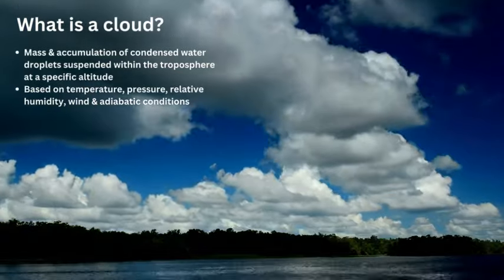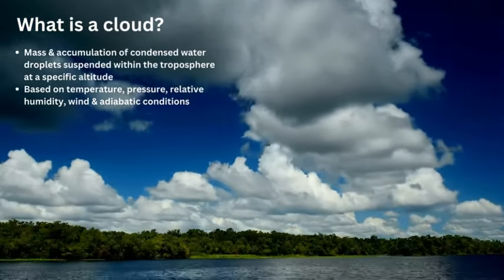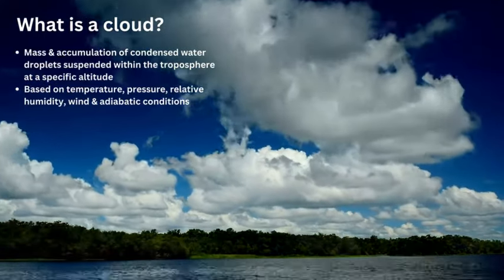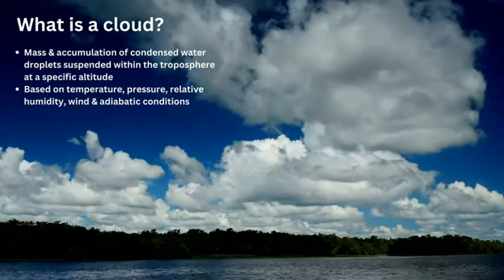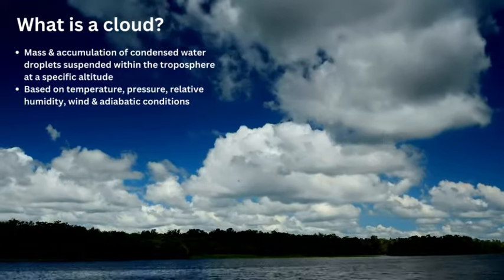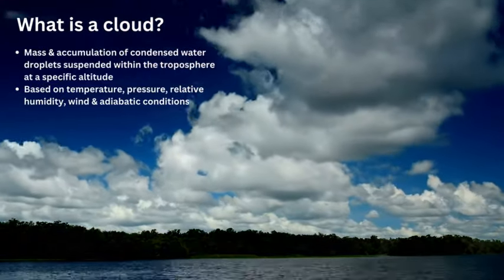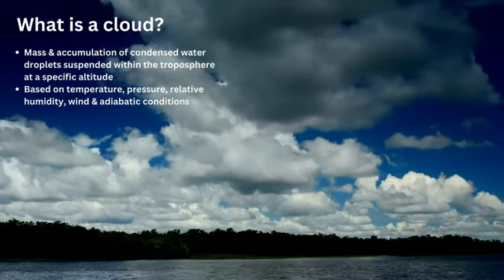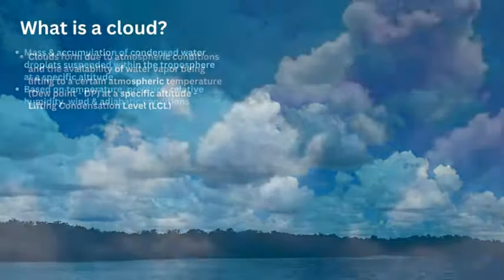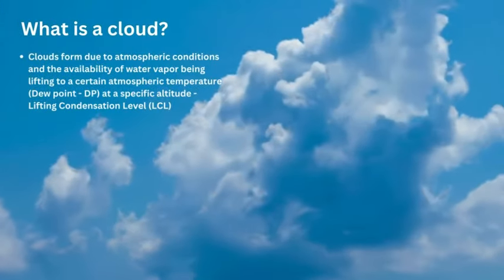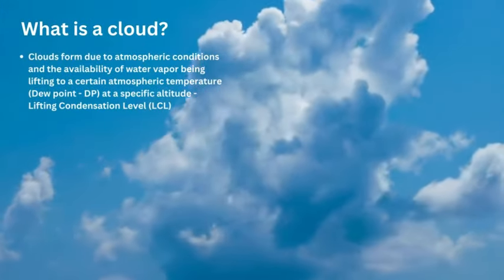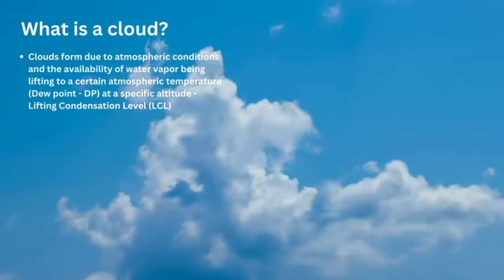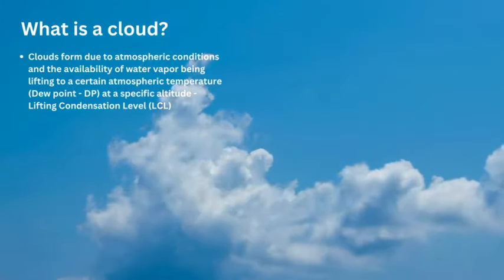So initially let's discuss what a cloud is. A cloud is a mass of water droplets that are suspended in the atmosphere at a certain altitude based on atmospheric conditions — for example, wind, humidity, temperature, and whether it's a stable or unstable atmosphere — and also the amount of material available to form the clouds, which is going to be water vapor.